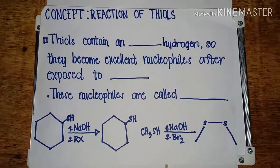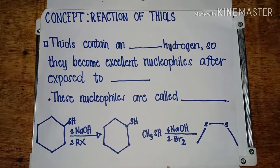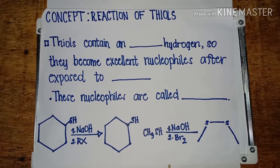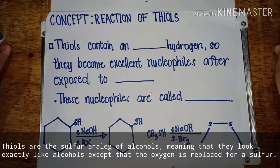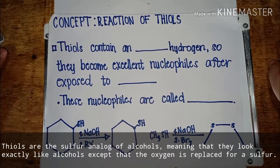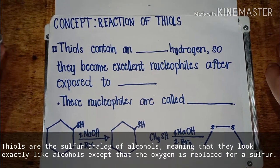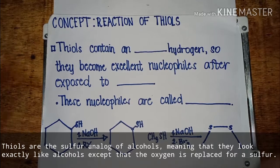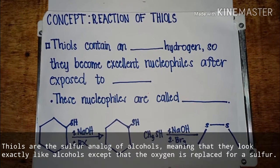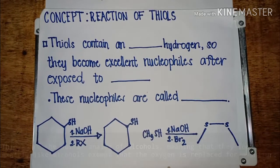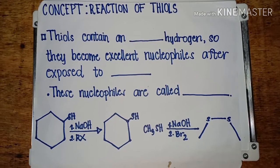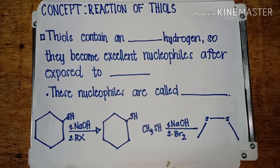Now we're going to discuss reactions of thiols. Thiols are the sulfur analog of alcohols, meaning that they look exactly like alcohols except that the oxygen is replaced by a sulfur. So how does a thiol exactly react? Let's find out.